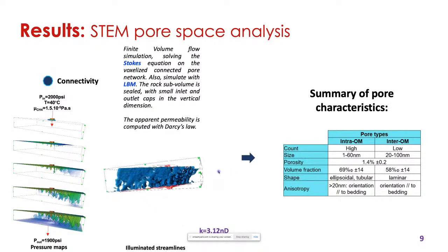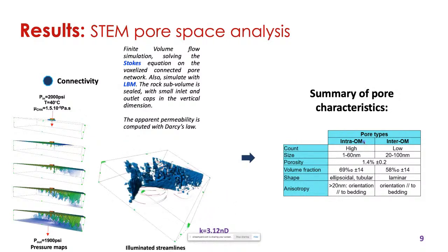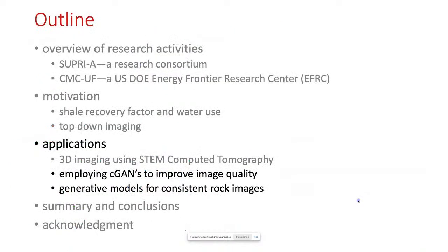Quick summary: we can identify both the intra-organic matter pore sizes and those within the organic matter. We can characterize the porosity, the shape and nature of the pores, as well as any anisotropy. With that, I'm going to transition into really what we've been trying to do lately with machine learning to extend images.